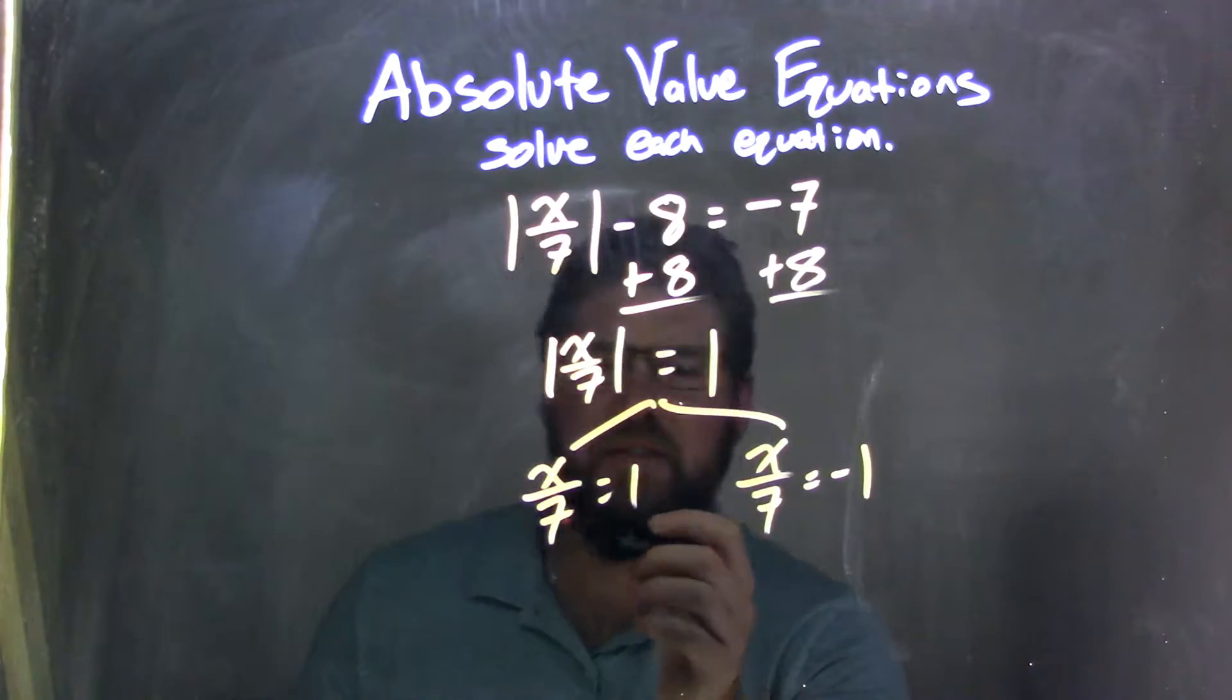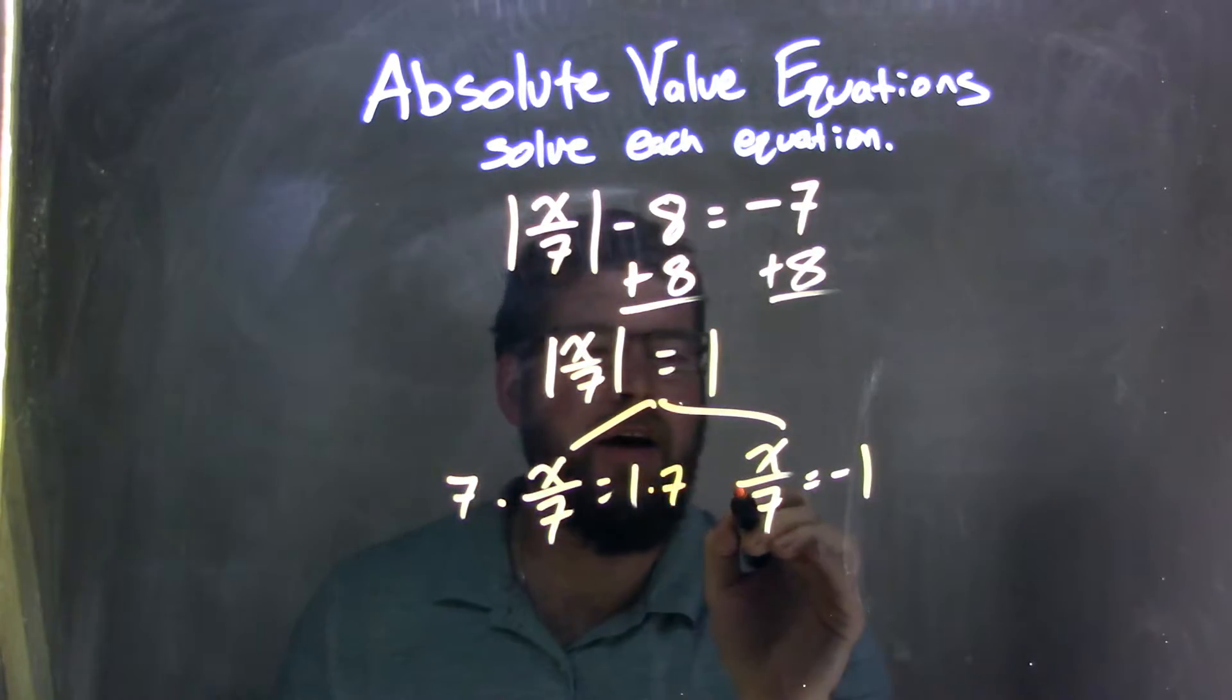Well, x over 7 equals positive 1, x over 7 equals negative 1. Solve each individually, multiply both sides by 7.